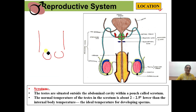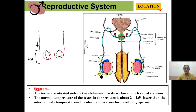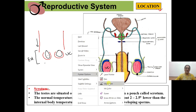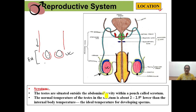The scrotum contains the male reproductive organ — the testis. One important thing to notice is that the scrotum is actually extra-abdominal in position — it is found outside the abdomen. Why? Because the temperature of the scrotum is 2 to 2.5 degrees lower than the body temperature. We are warm-blooded animals and our main body temperature is quite high — at that high temperature, sperms normally cannot survive.